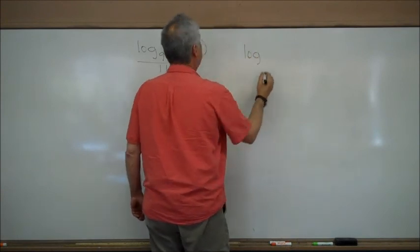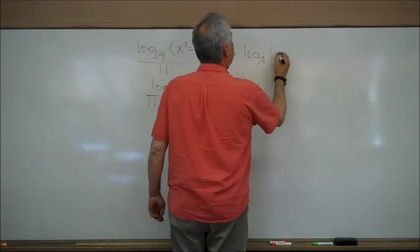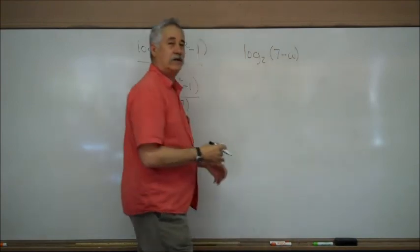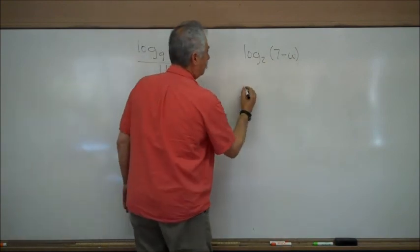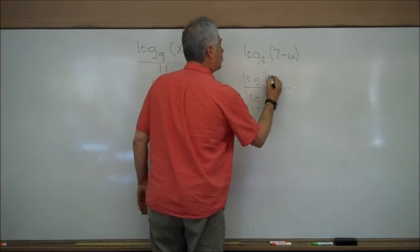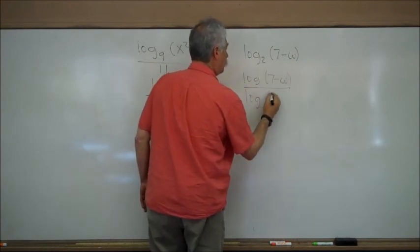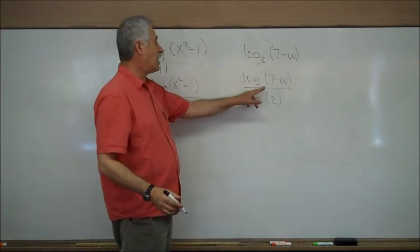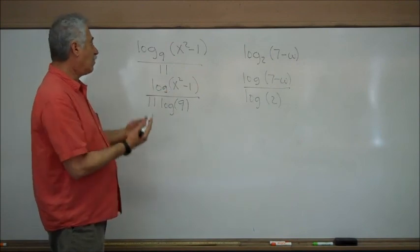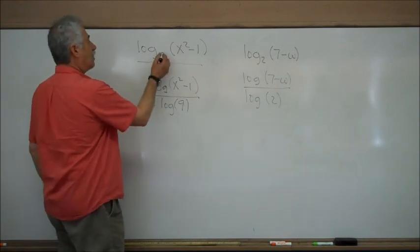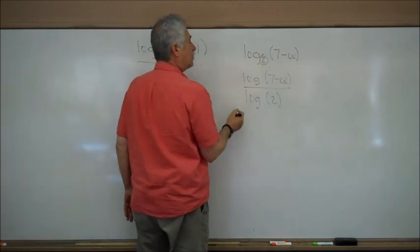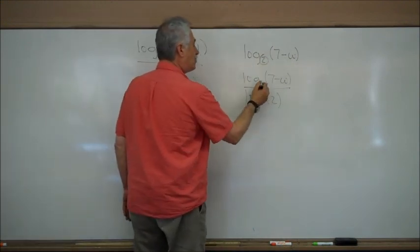Final example: logarithm base 2 of (7 minus w). Draw a fraction bar. Logarithm of (7 minus w) over logarithm of 2. Remember, this is logarithm base 10 in the numerator and logarithm base 10 in the denominator. Our goal was to change a logarithm from some other base to base 10, and we've done it.